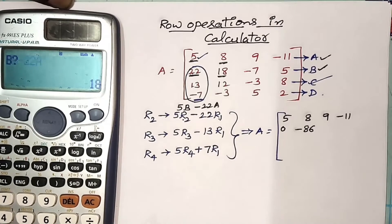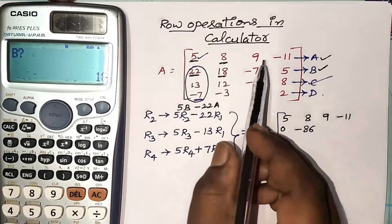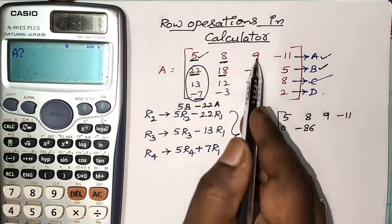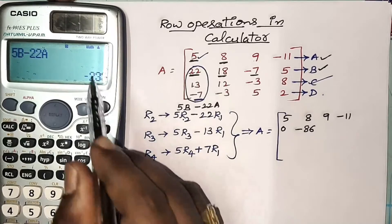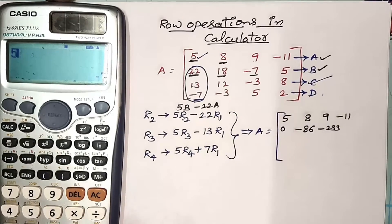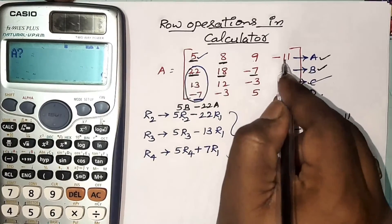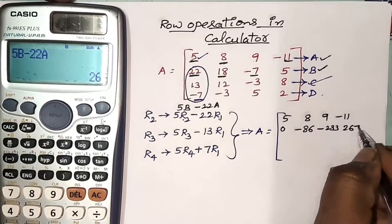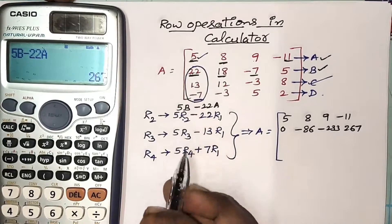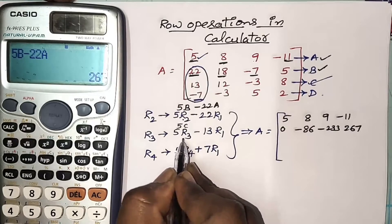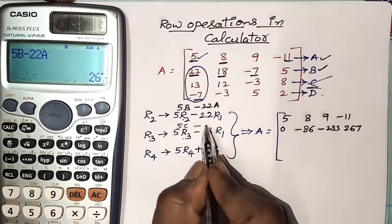For every entry you should press the equals symbol. Next, B value is negative 7 and A value is 9 — I got minus 233. For the last element, B value is 5 and A value is negative 11 — I got 267. Next, the third row operation becomes 5C minus 13A.